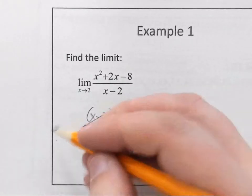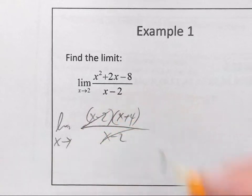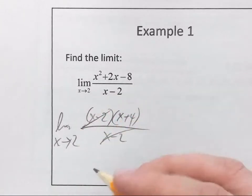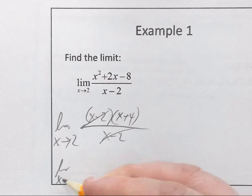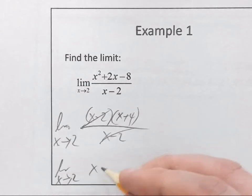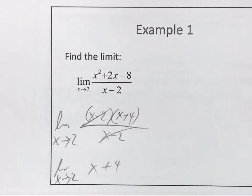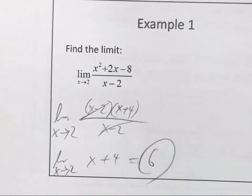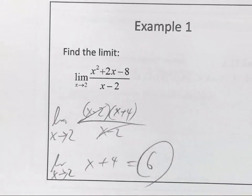So what happens when I do that? The x minus 2's can cancel. Now, they're still affecting the graph, but you can actually get an idea of what this thing looks like, because all you're left with is x plus 4. Now, can I plug in the 2 now? Yeah, what do you get? 6. So the idea is to change the way the function looks without actually changing its value.